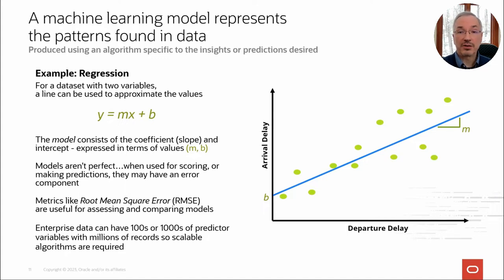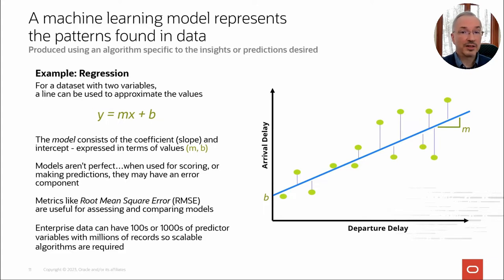By design, models aren't intended to be perfect — they need to generalize to be useful. The difference between the predicted value and the actual value, called a residual, should be as small as possible. When assessing or comparing models, we can use all the residuals to compute metrics like root mean square error. Enterprise data can have hundreds or thousands of predictor variables with millions of records, so scalable algorithm implementations are required, as we have with the in-database algorithms.